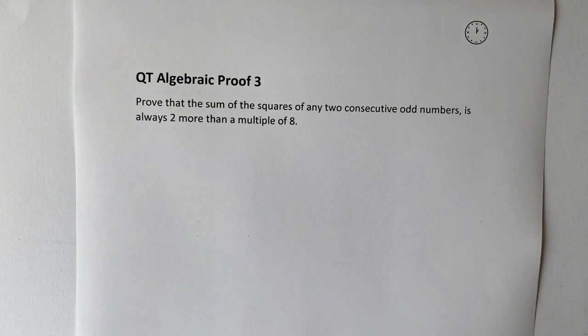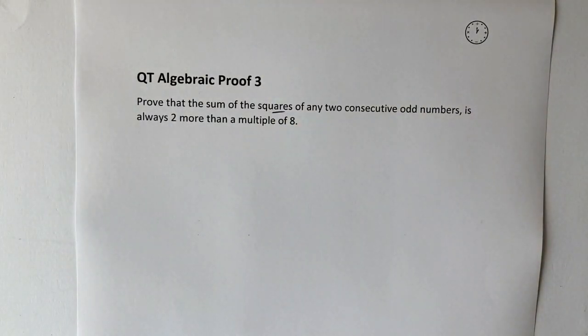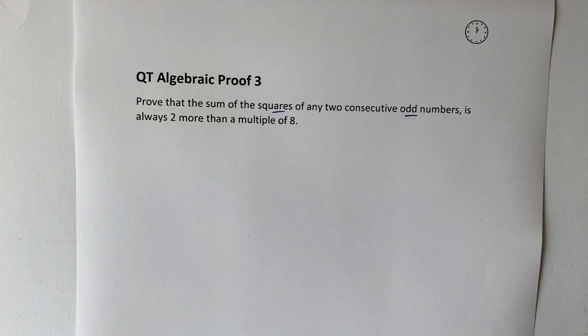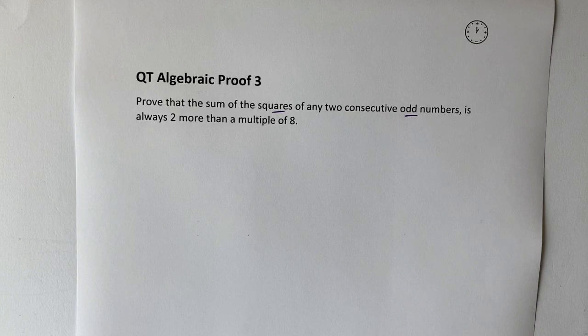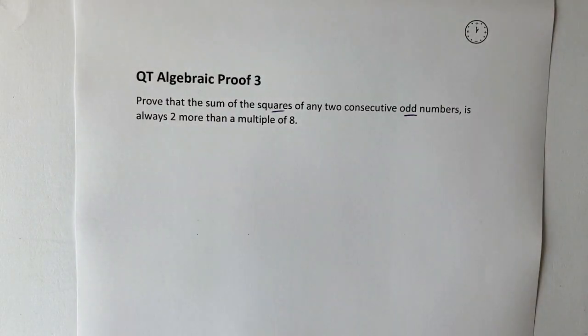So it says prove that the sum of the squares of any two consecutive odd numbers. So two consecutive odd numbers would be numbers like three and five or seven and nine or 13 and 15. They're the odd numbers consecutively and it's always two more than a multiple of eight. Well, I'm not going to worry too much about the last little bit for the moment.